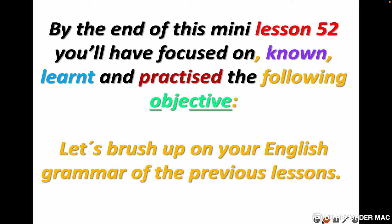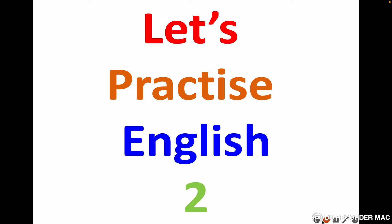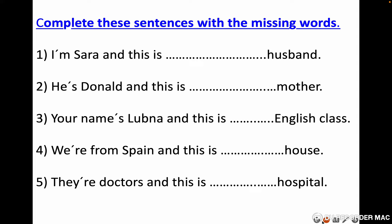By the end of lesson 52, you will have focused on, learned and practiced the following objectives. Let's brush up on your English grammar from the previous lessons — let's see your level of English grammar. Let's practice: complete these sentences with the missing words. In every sentence there is one missing word.